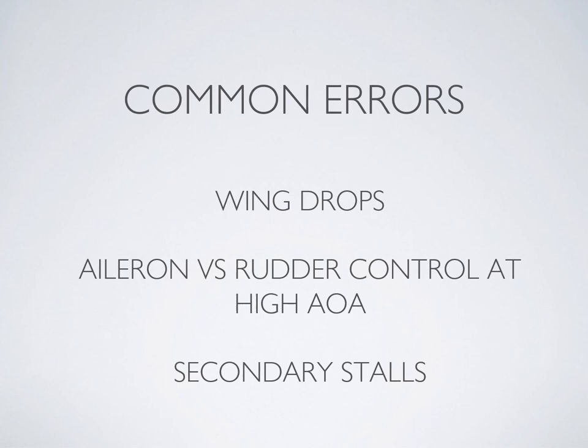Some common errors in the power on stall exercise are maintaining directional control, preventing yaw, and preventing wing drops. At really high angles of attack, think about aileron control versus rudder control — your rudder will definitely have more authority than your ailerons, so if you start to lose directional control, use your rudder rather than your ailerons. You also want to avoid a secondary stall, which can occur if you pitch too far nose down in recovery and then pitch up too quickly to regain altitude, putting you back into another stall.